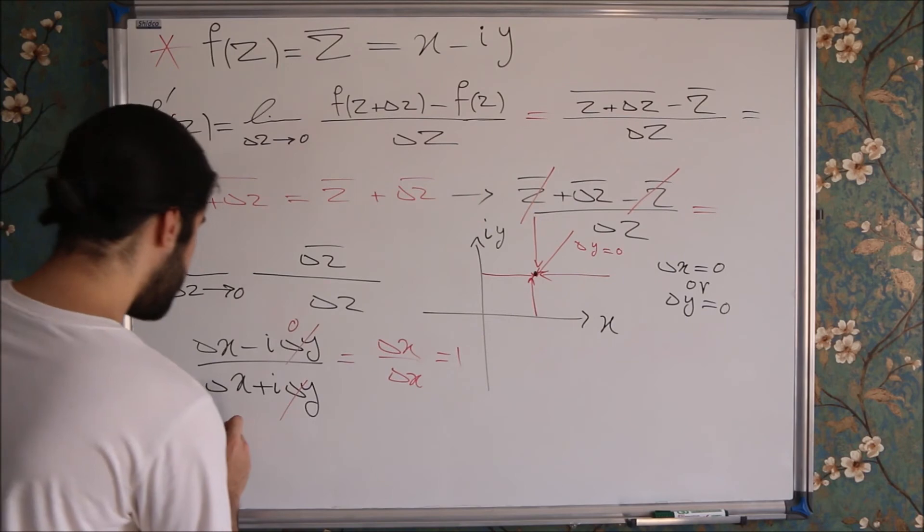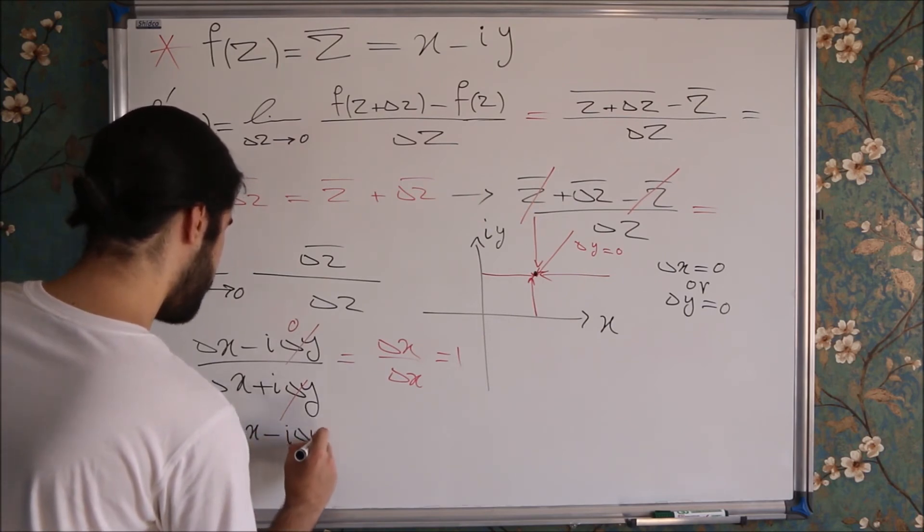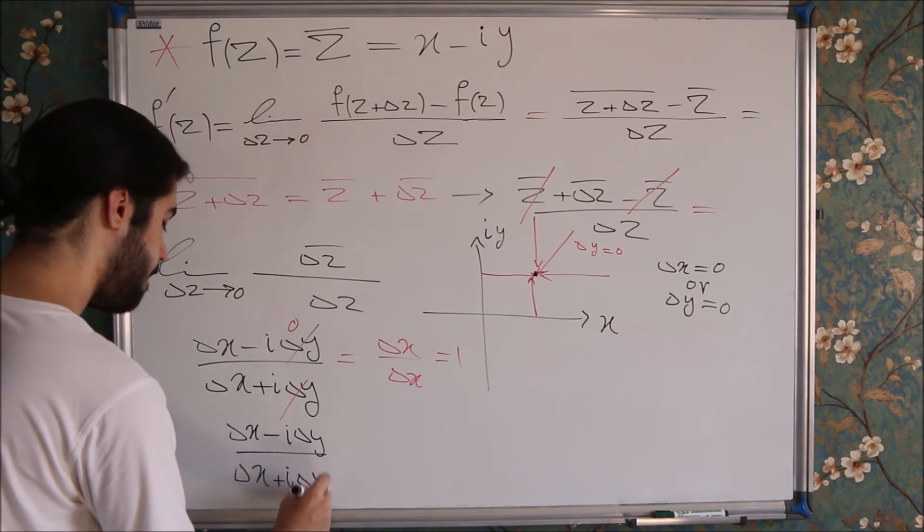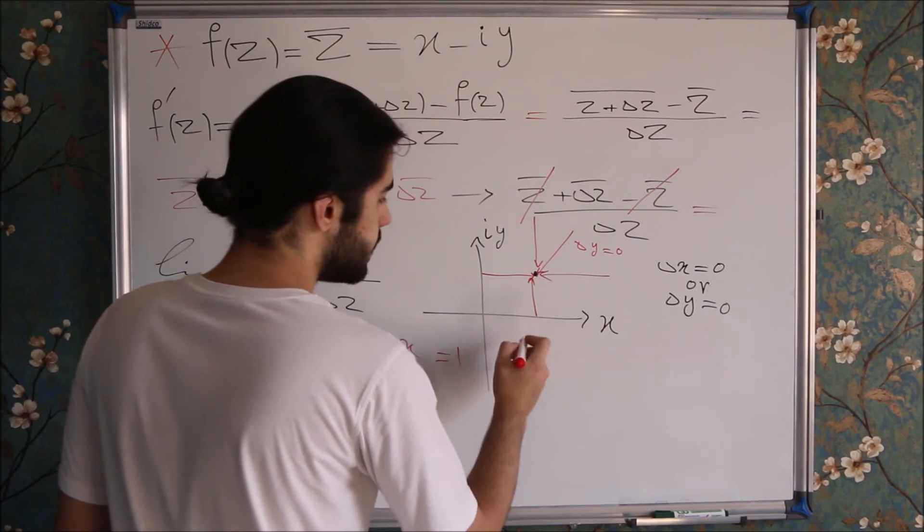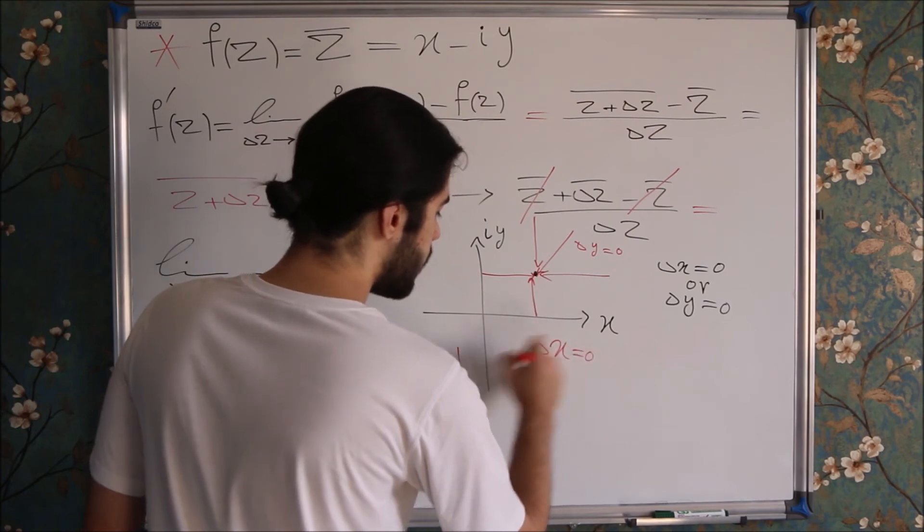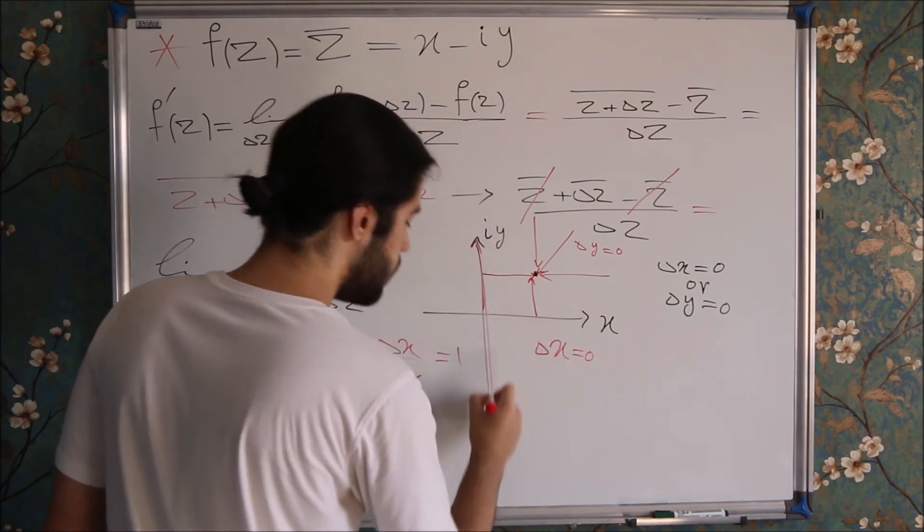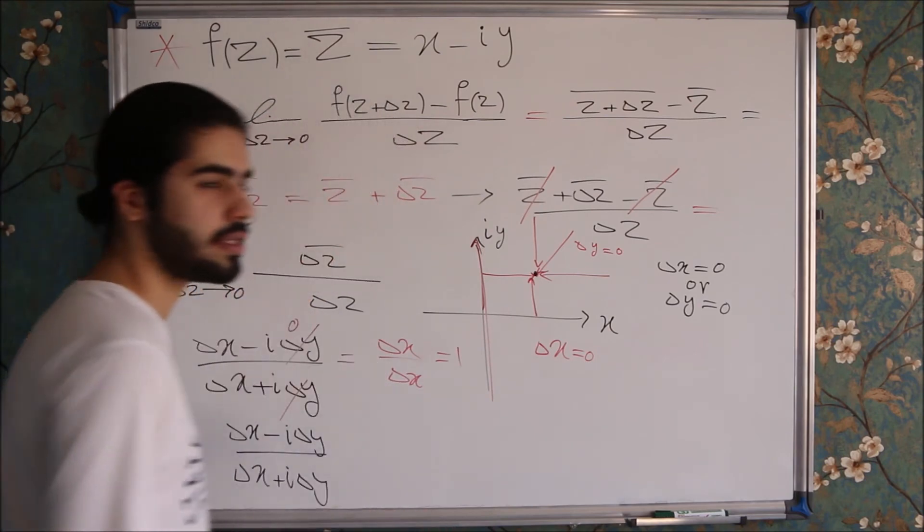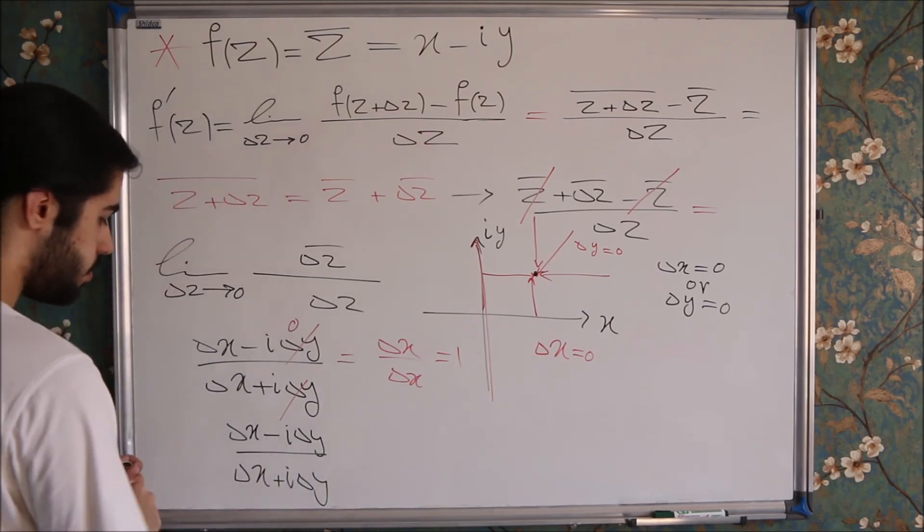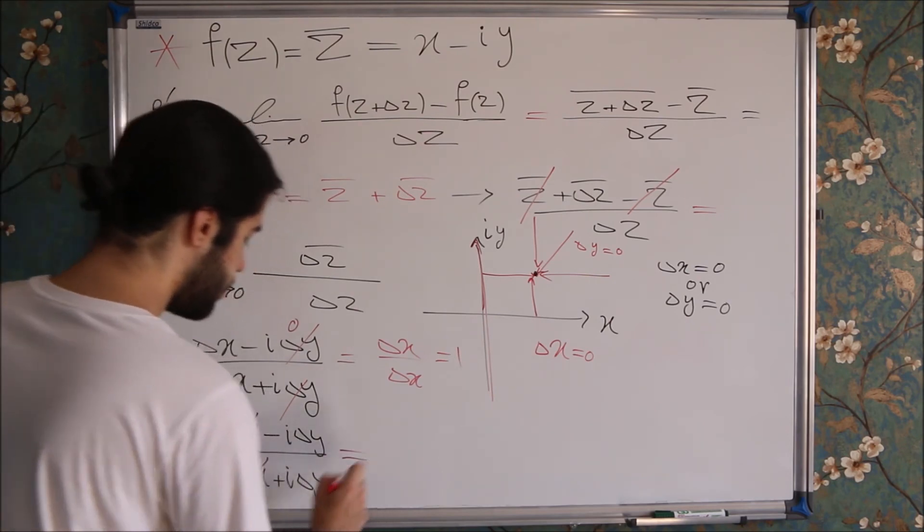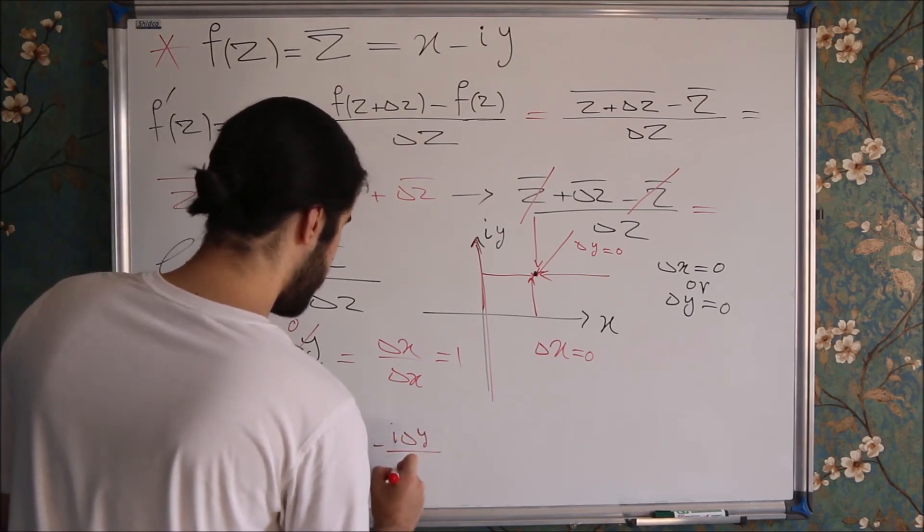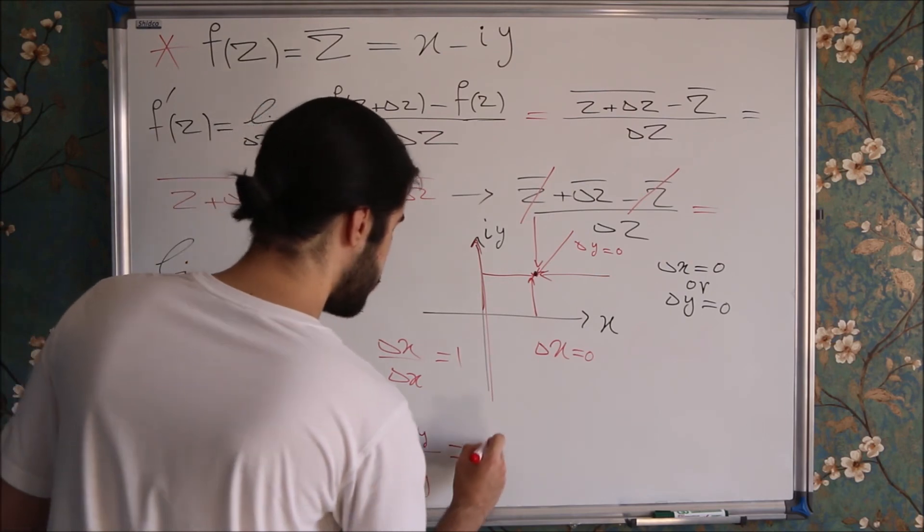So what if I move in the y-axis? So my change in X variable will be zero, because if I move up and down, my x won't change. So I can write Delta X is equal to zero. So now I can cancel Delta X in numerator and denominator, so I will get minus i times the Delta Y over i times positive i times the Delta Y. So my derivative in this case will be minus 1.